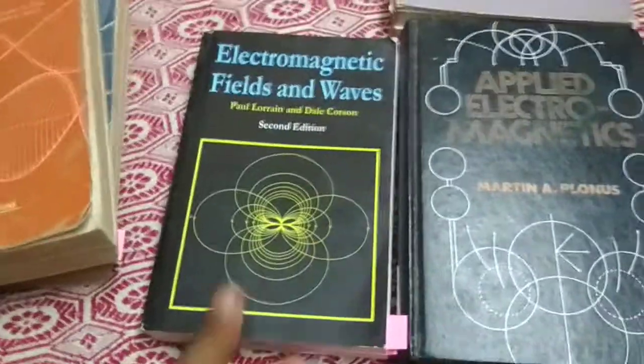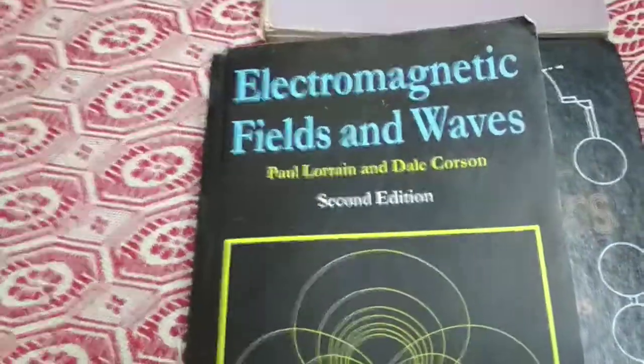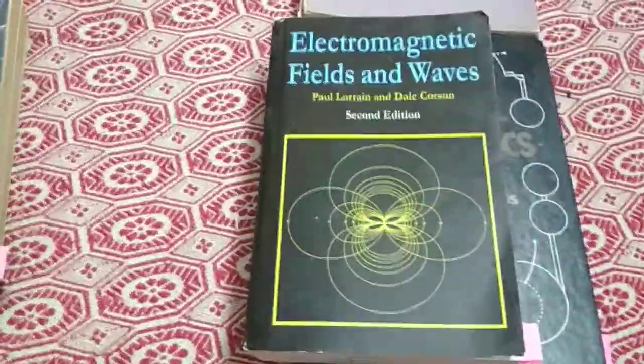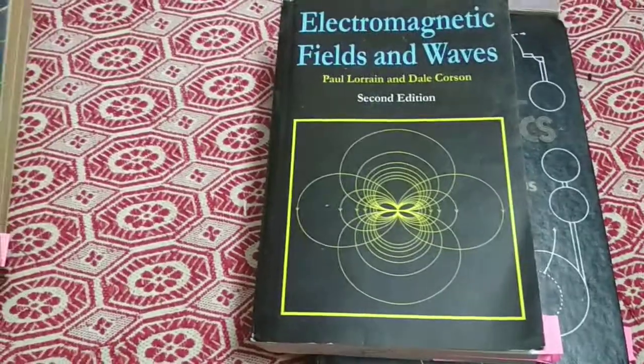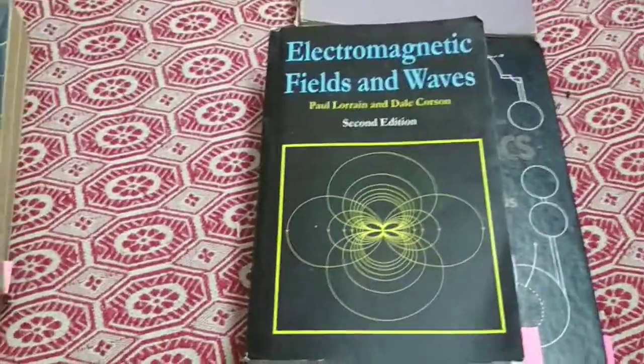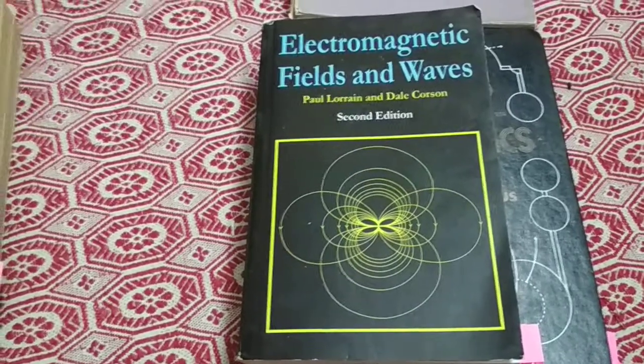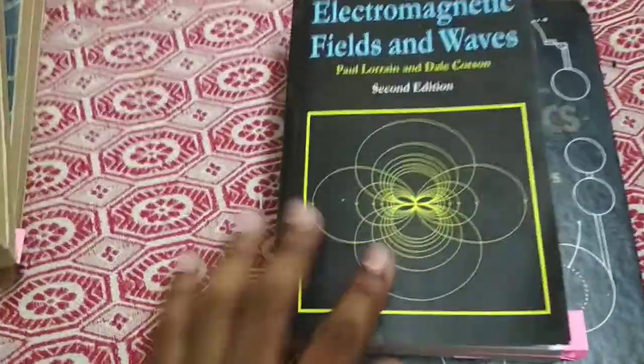Next comes this textbook by Carson and Loren, Electromagnetic Fields and Waves. I admire this textbook for its figures. It was published around 1986. The pictures depicting the electromagnetic phenomena in this textbook are wonderful. At that time, how they managed to get them I don't know.